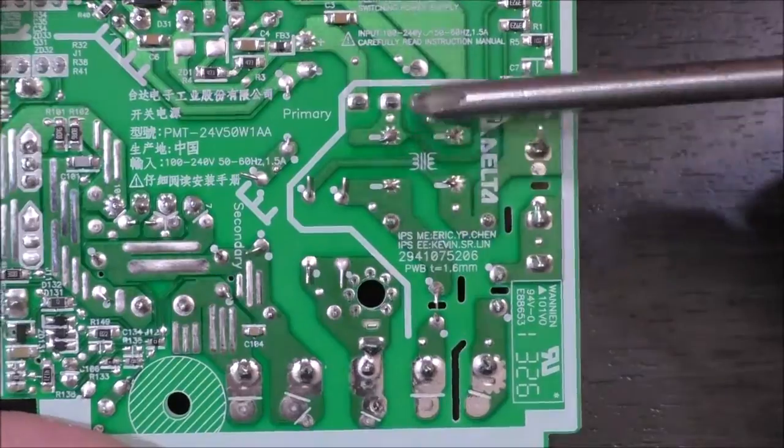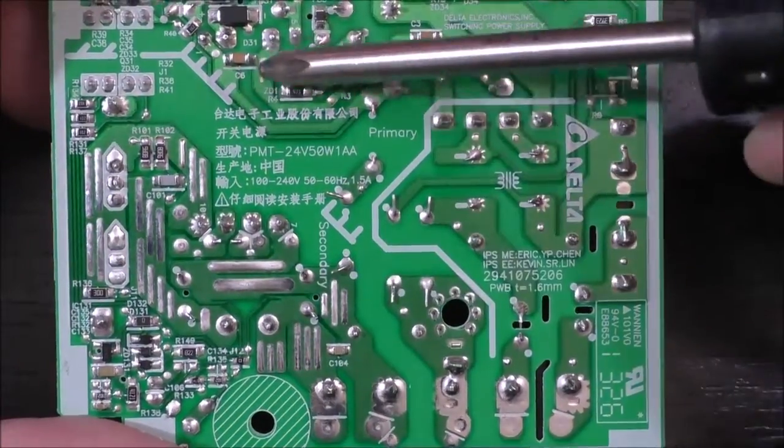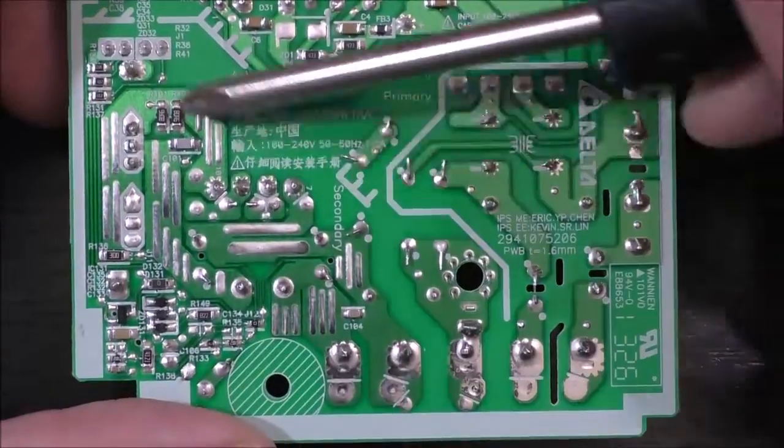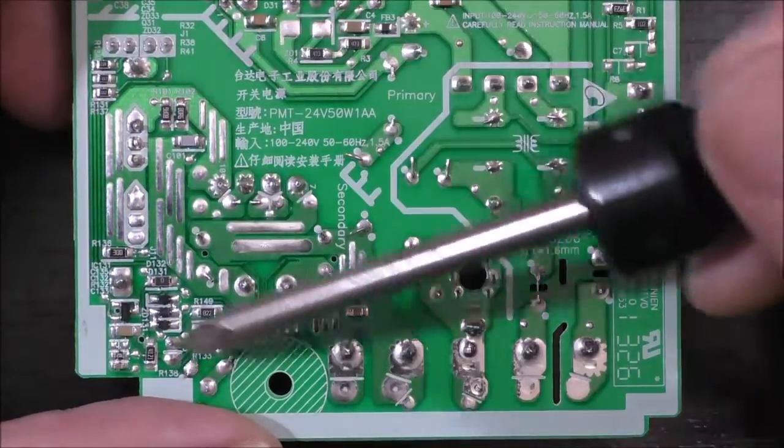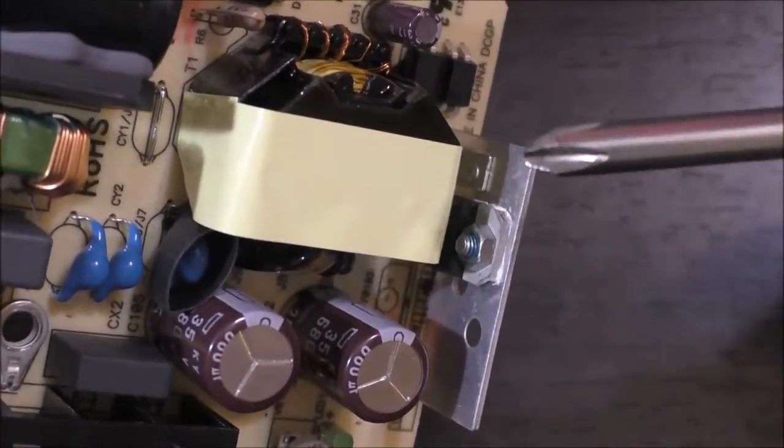And then we'll move on to the low voltage side. Over here, it's obviously where the main switching transformer is. So we have the main high current low voltage output side. This is the 24 volt side. And as you can see, this is where the main switching transformer was.